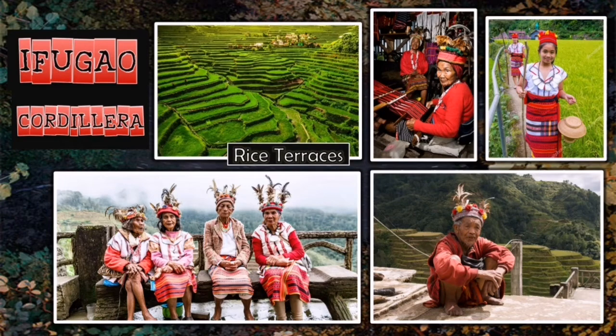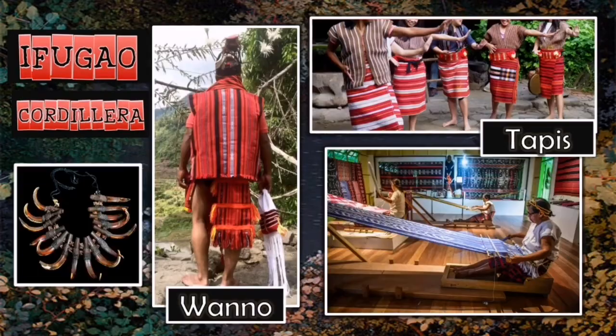The Ifugaos are the people in the province of Ifugao in the Cordillera mountain ranges of central Luzon. Their name comes from the word Ipugo, which means from the hill, making them inhabitants of the known earth. Their name is associated with the popular man-made Banawe rice terraces, hailed as a UNESCO World Heritage Site. The clothing of the Ifugaos is woven from looms. Ifugao males wear the traditional attire called Mwano, a form of loincloth, with six different types depending on social status and occasion. The Ifugao females wear a wrap-around skirt called tapis, also in five different kinds to match their social status and occasion.